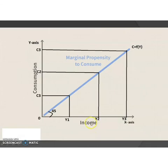The consumption curve initiates from the origin. A straight line from the origin at 45 degrees between the two axes — all points on this line indicate that consumption is equal to income, meaning the entire income is used for consumption.